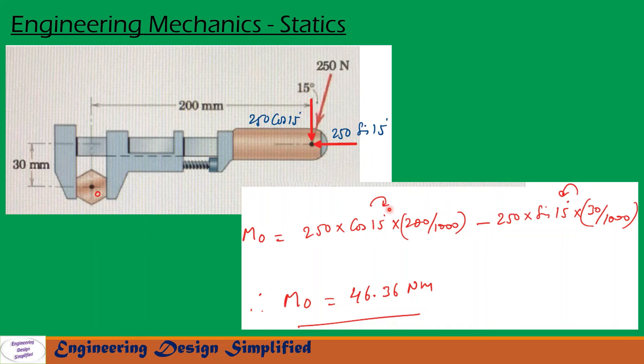This is clockwise moment. Now let us write the moment due to this 250 sin 15 about O, which can be written as 250 sin 15 times this distance of 30 divided by 1000. So 30 is in millimeters, again 1000 is to convert this into meters. The negative sign here is because this force will create a counterclockwise moment about O.